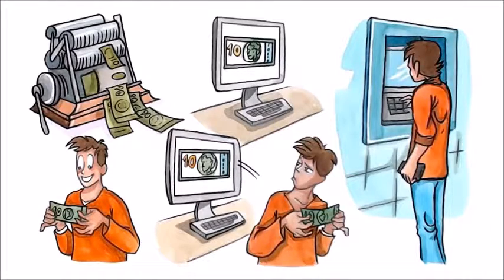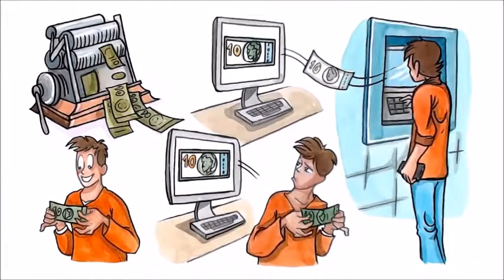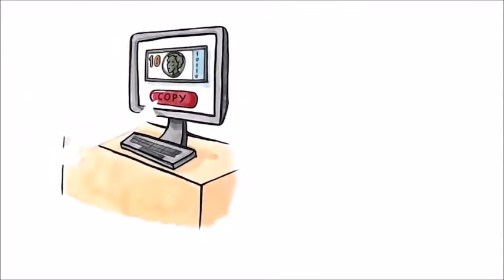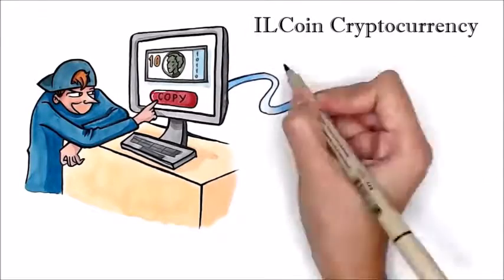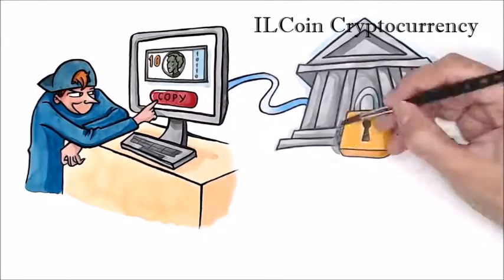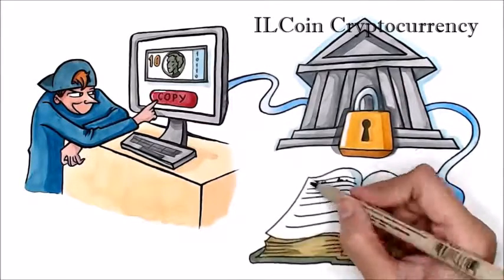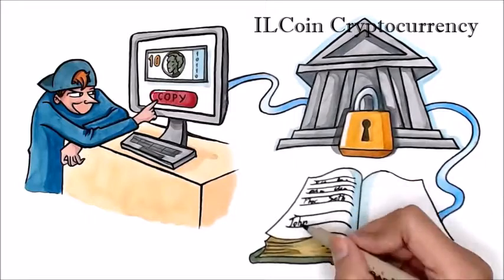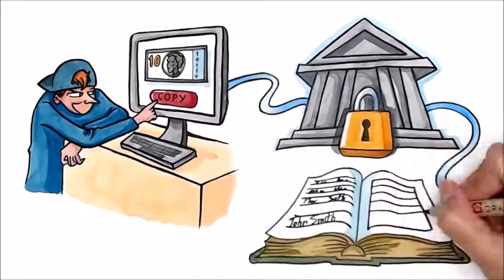But when we transfer money, use an ATM, or pay with a debit card, that's pretty much exactly what we do — we're sending money as a digital message. To make sure no one's cheating or sending money they don't have, these messages go through a few trusted banks that keep a record of everything and know how much money everyone has, deducting it properly for every transaction.